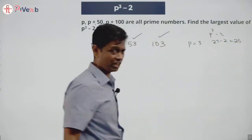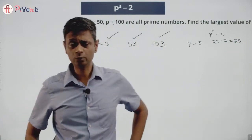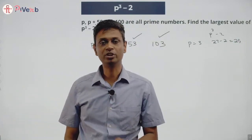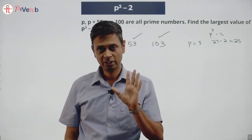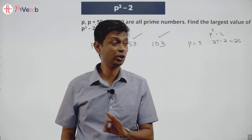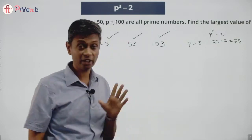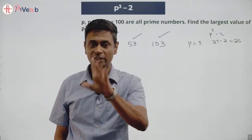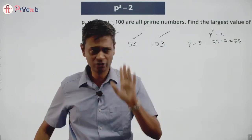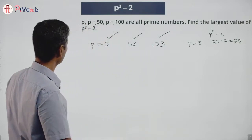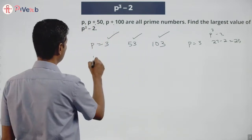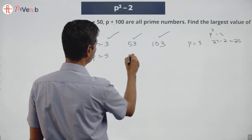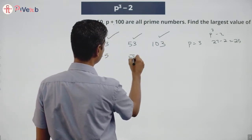I am not saying we have got the largest value, but we have got one value. p equal to 3 works. If p were 3, p cubed minus 2 is 25. We have got ourselves one value. Nice! Now let us find another. Next prime number is 5. 5 won't work — 55 is not prime.